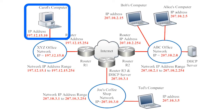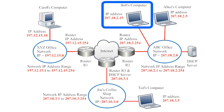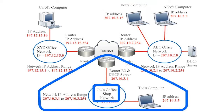When IP addresses are assigned dynamically, as they are for Bob's computer, there's a chance that there won't be any room for him when he tries to connect. If the DHCP server has already assigned all available IP addresses, there won't be any left for Bob. The advantage of dynamic IP address assignment is flexibility — thousands of different devices could connect to the ABC network, and as long as they don't all try to connect at the same time, the DHCP server can accommodate them all.